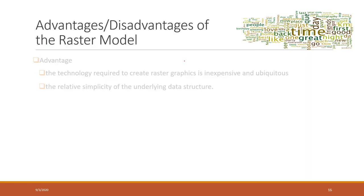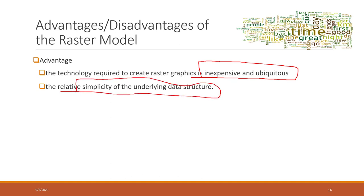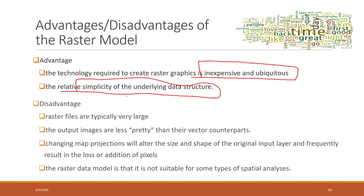There are advantages and disadvantages to using the raster data model. The technology is inexpensive and is pretty much everywhere — nowadays we can even use our cell phones to take photos, which are saved in the raster data model. The data structure is also pretty simple; each cell has a unique digital value.